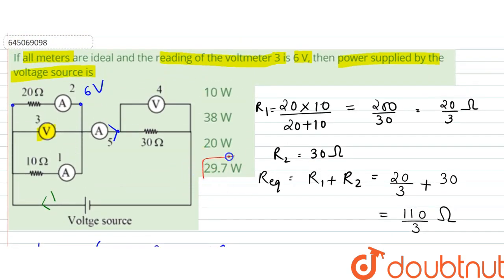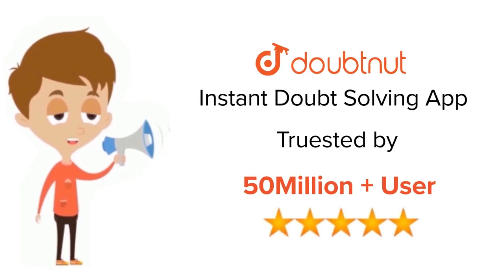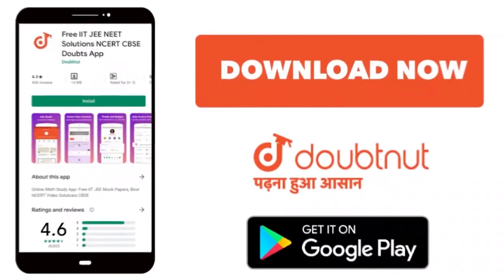So our answer is 29.7 watt. That is option D is the correct answer. Thank you. For class 6 to 12, IIT-JEE and NEET level, trusted by more than 5 crore students, download Doubtnut today.